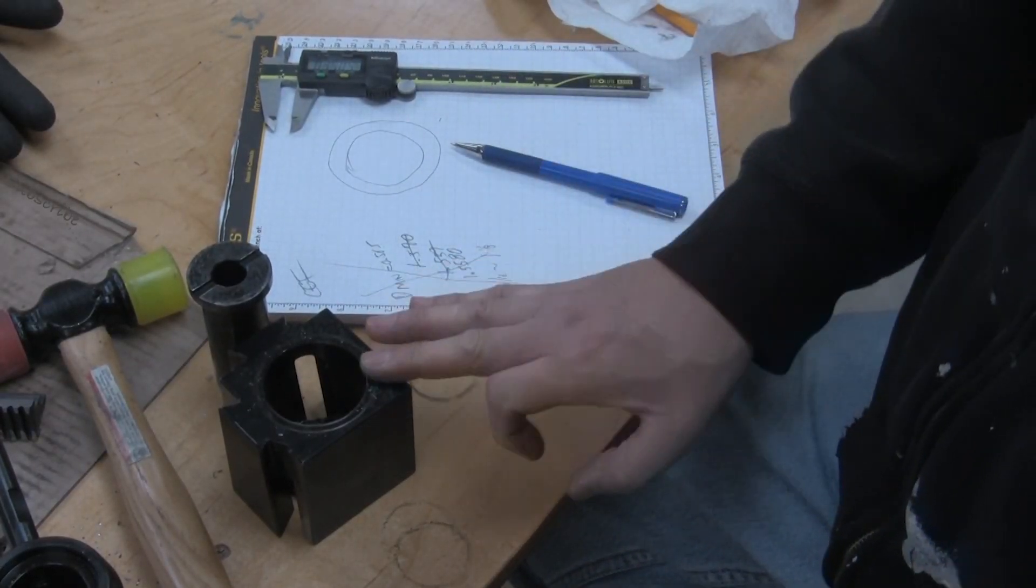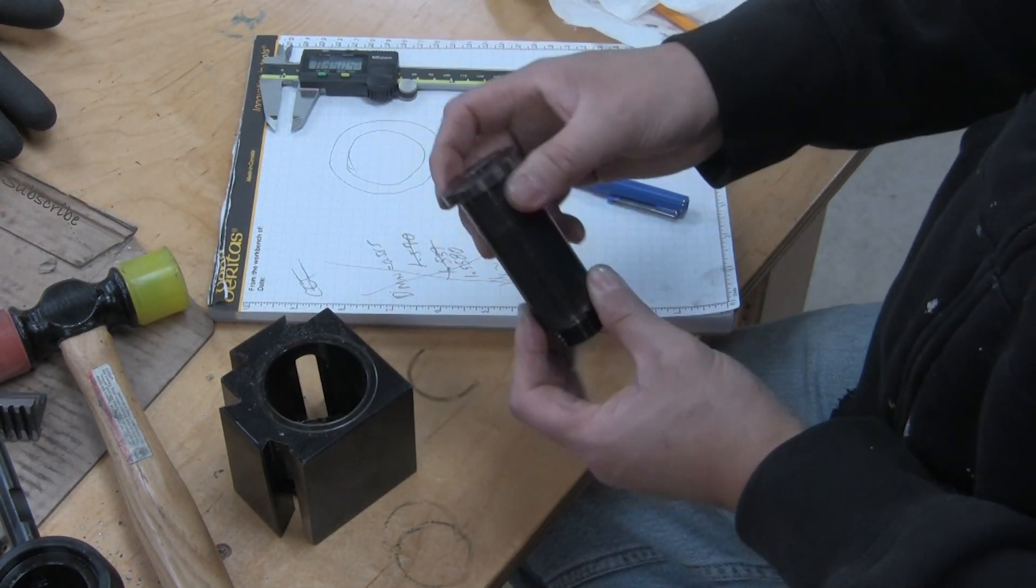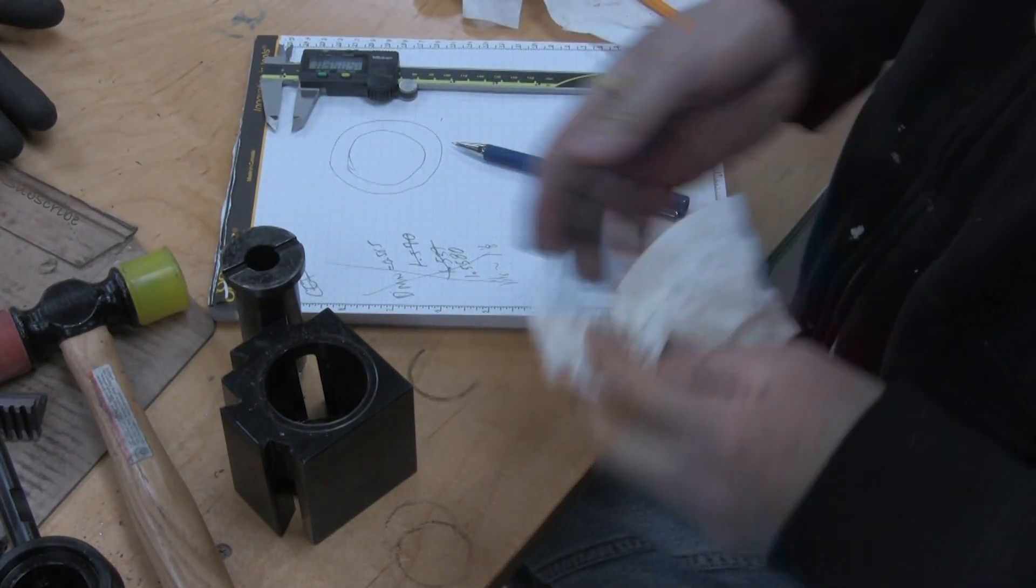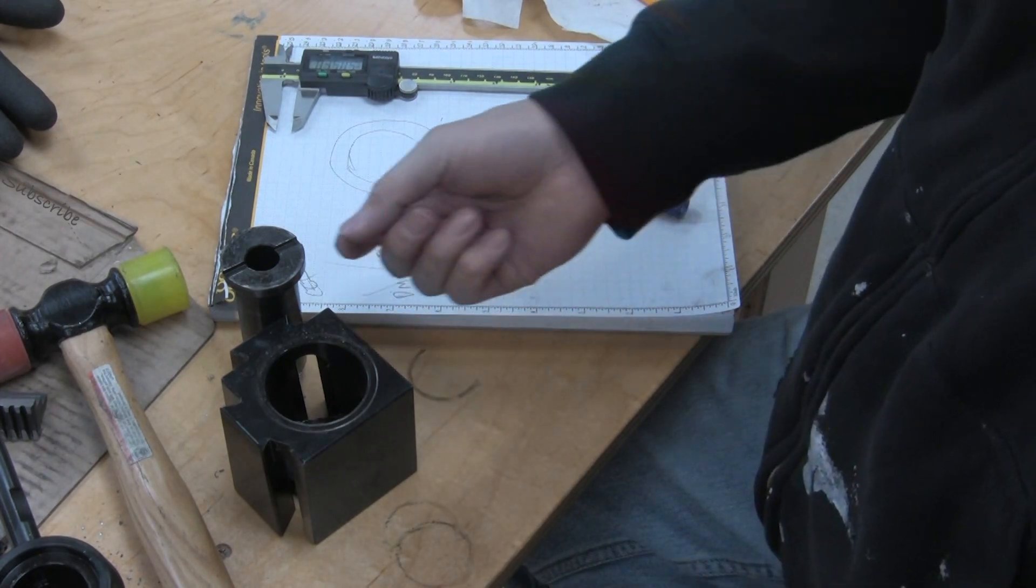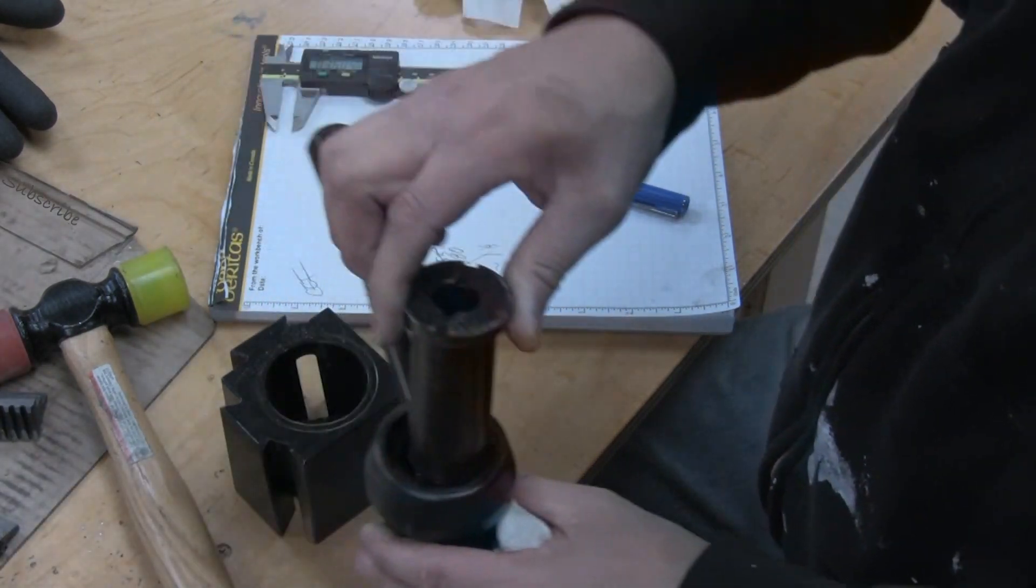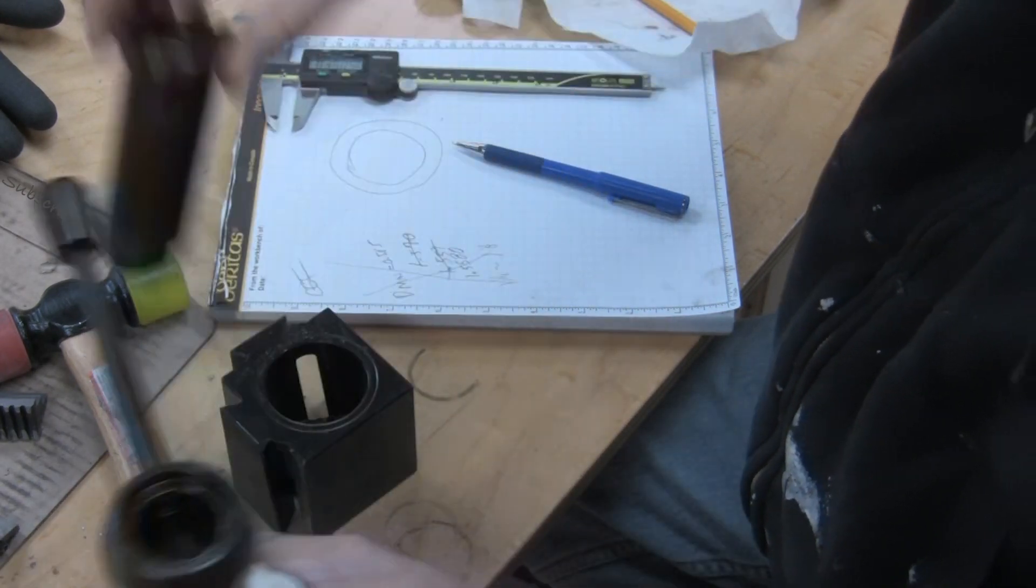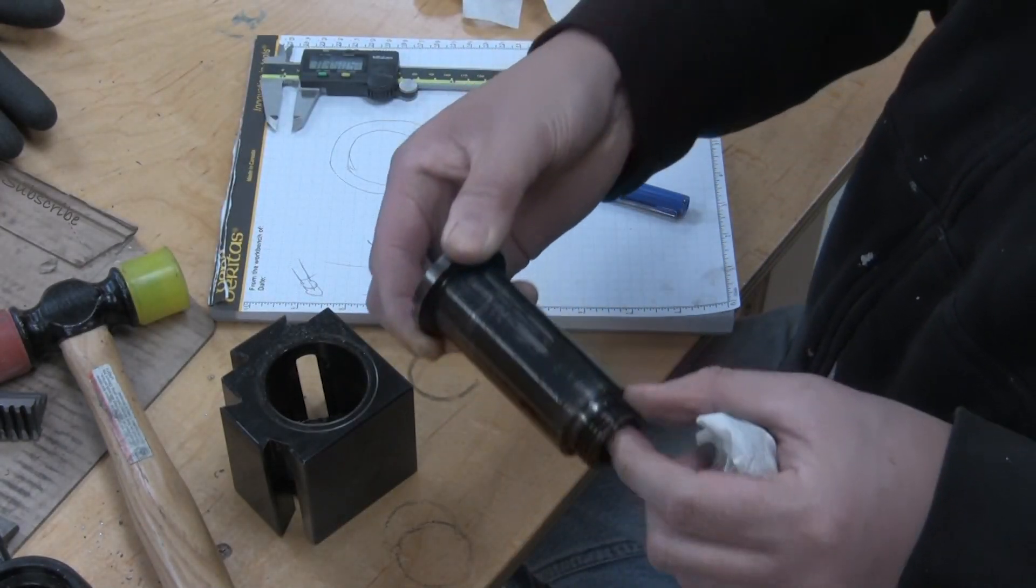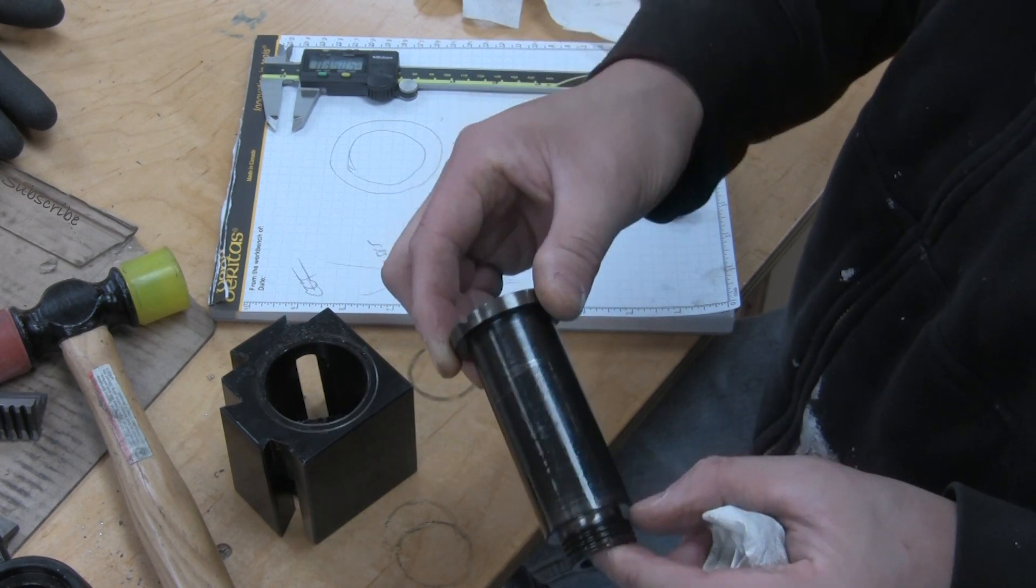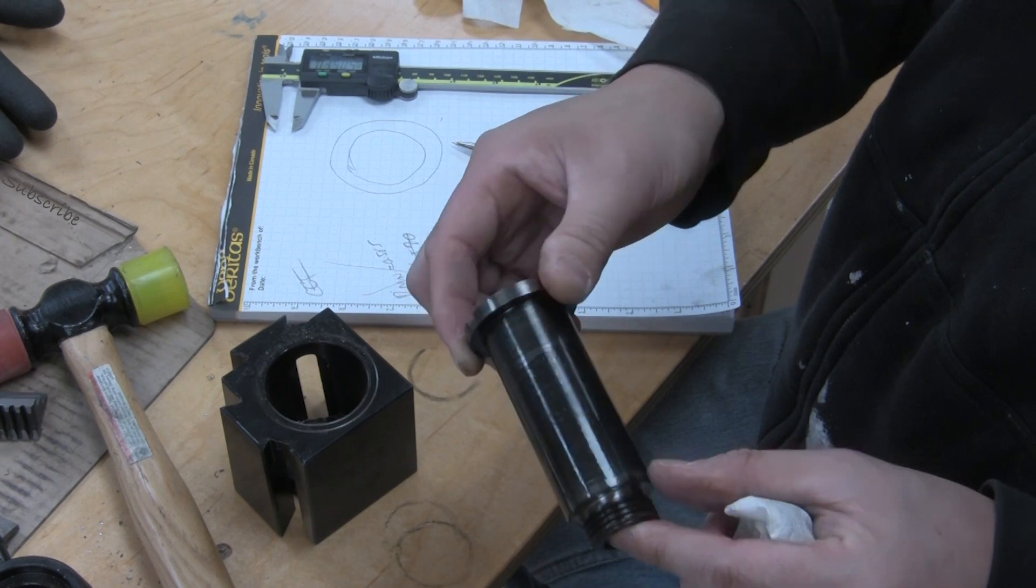So I decided to make a washer shim washer to put on this under this shoulder for a couple reasons. If I do that, I can experiment with the thickness of the shim to fine-tune how tight these are going to mate. If I just go ahead and machine this off, I won't be able to do that. Once I cut it, you know, unless I nibble away at it, you ruin this part, you're done.